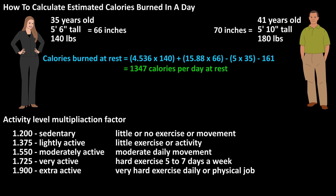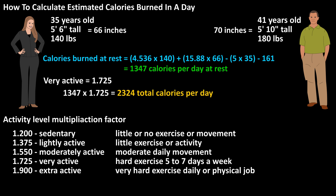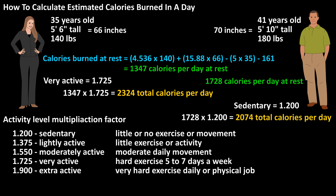For our female example, let's say that she's very active. So we would multiply her calories at rest by 1.725, which is 1,347 calories times 1.725. This calculates to 2,324 calories rounded off per day. And let's say that the male is sedentary, so we multiply his calories at rest by 1.200, which calculates to 2,074 calories rounded off per day.